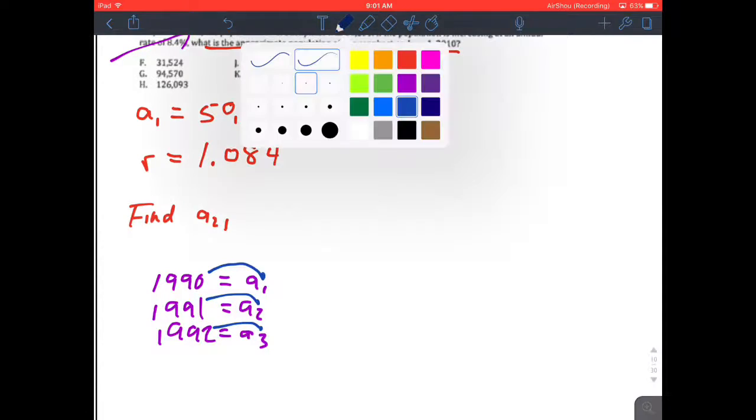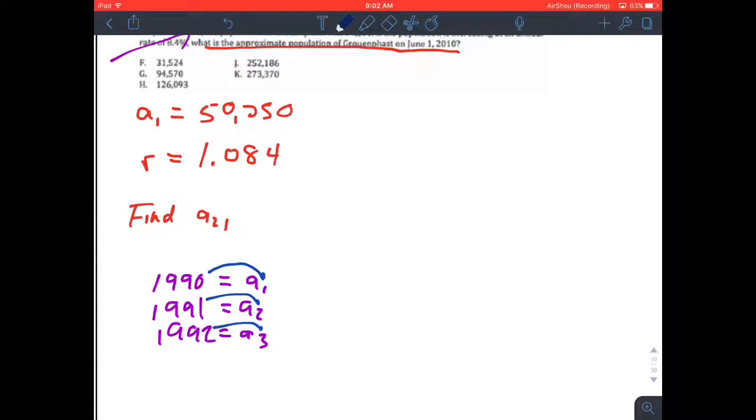So it stands to reason if you keep doing this, which we're not going to, but if you keep doing it and get to 2010, instead of being the 20th, it's going to be the 21st. That doesn't make sense. Just count out every number from 1990 to 2010, and you'll see that that's what happens.